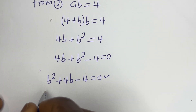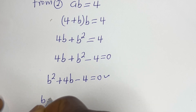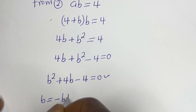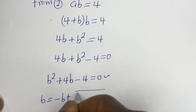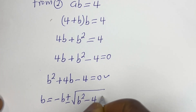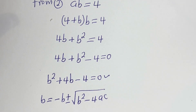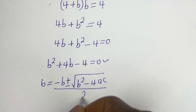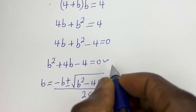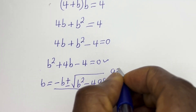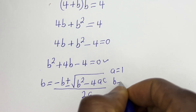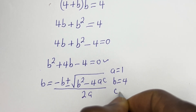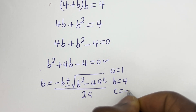Let's solve this using the quadratic general formula: b is equal to minus b plus or minus square root of b squared minus 4ac, all over 2a. From this equation, a is equal to 1, b is equal to 4, and c is equal to minus 4.